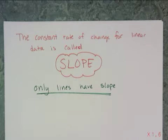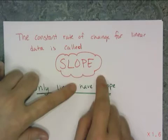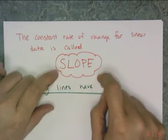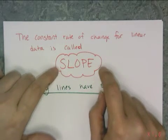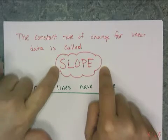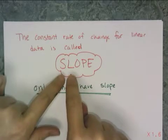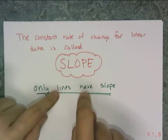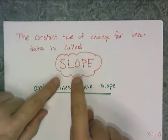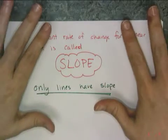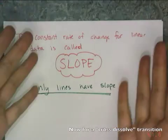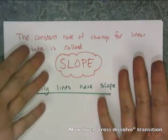So we're going to call it slope — slope is what we call that constant rate of change. We're going to talk specifically about slope for a while because this is probably the most important aspect of a linear function. It is the slope.